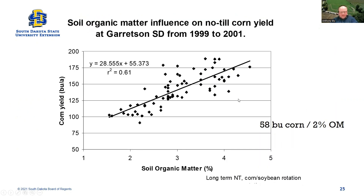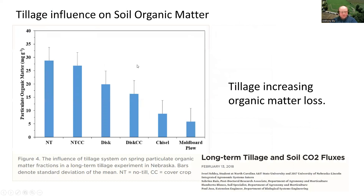A study done in this area shows the power of organic matter and its effect on corn yield — for about every 2% organic matter, that was 58 bushels of corn. So it's very important to manage soil health well and try to build those organic pools. We know that tillage has a negative effect on organic matter — going from no-till on the left all the way to more intensive moldboard plow on the right, we see that decrease in organic matter. We call that over-mineralizing; I call it stoking the fire with tillage, because it spurs on additional microbial activity that breaks down organic matter and releases that carbon into the air.